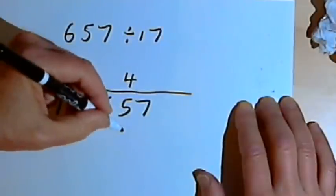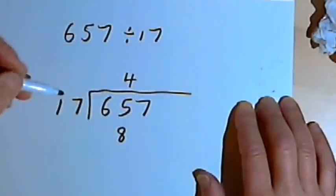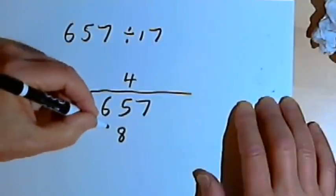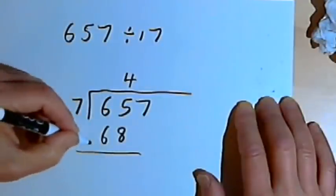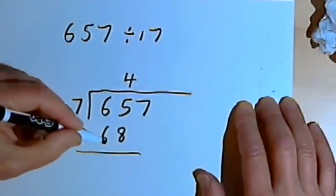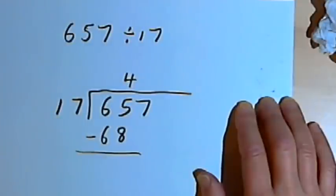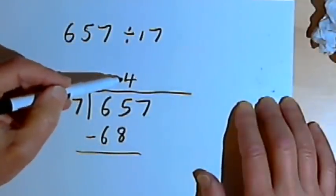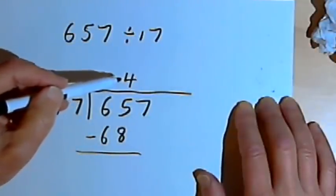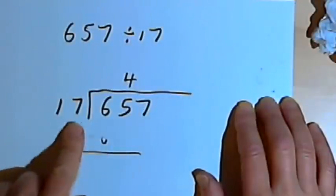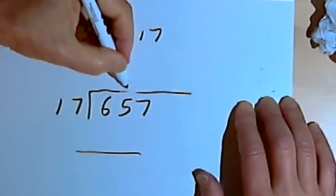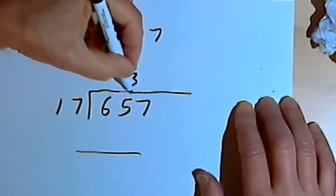So 4 times 7 is 28. I write the 8 and carry the 2. And 4 times 1 is 6. So now I've got to subtract 68 from 65. Well, that would give me a negative number. So what this means is I've chosen a number before and it was too big. So this happens sometimes. You want to make sure you have an eraser. Instead of saying it went in 4 times, I'll try a 3.